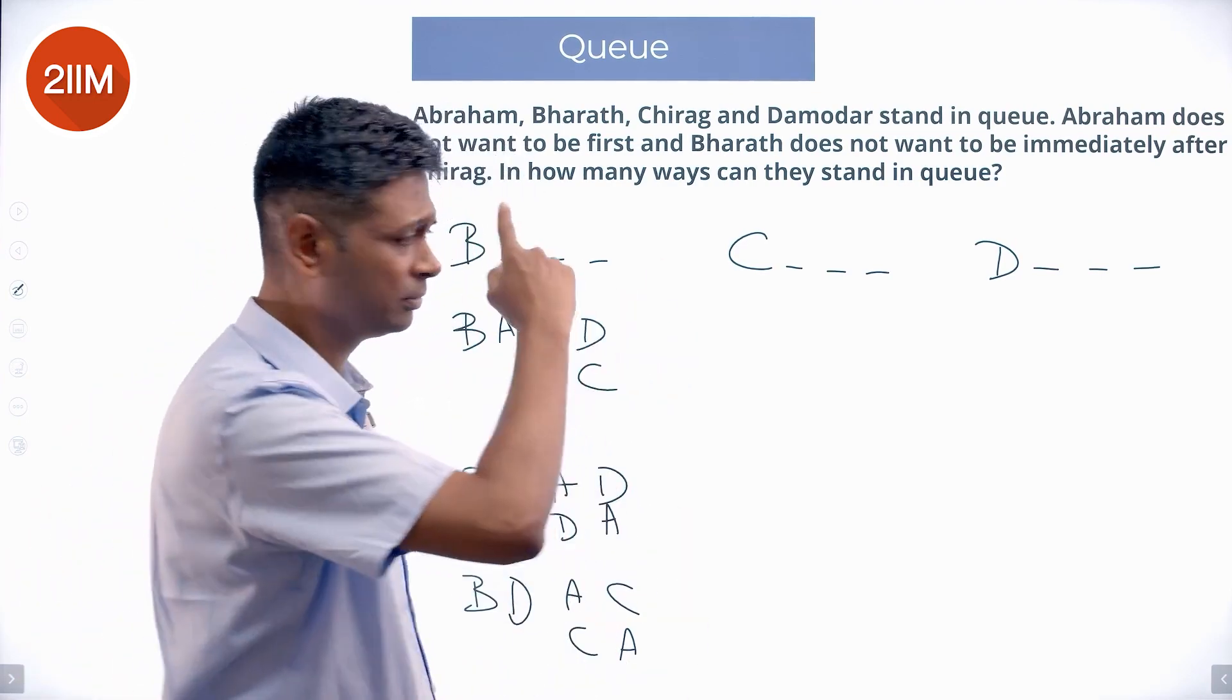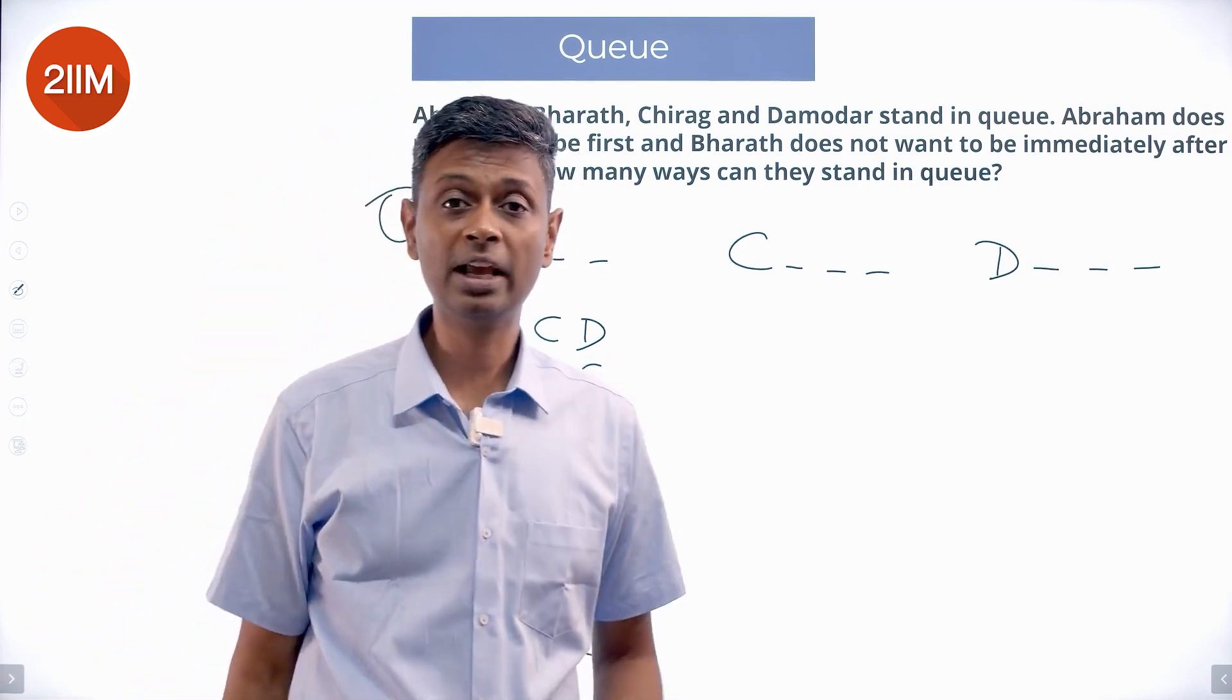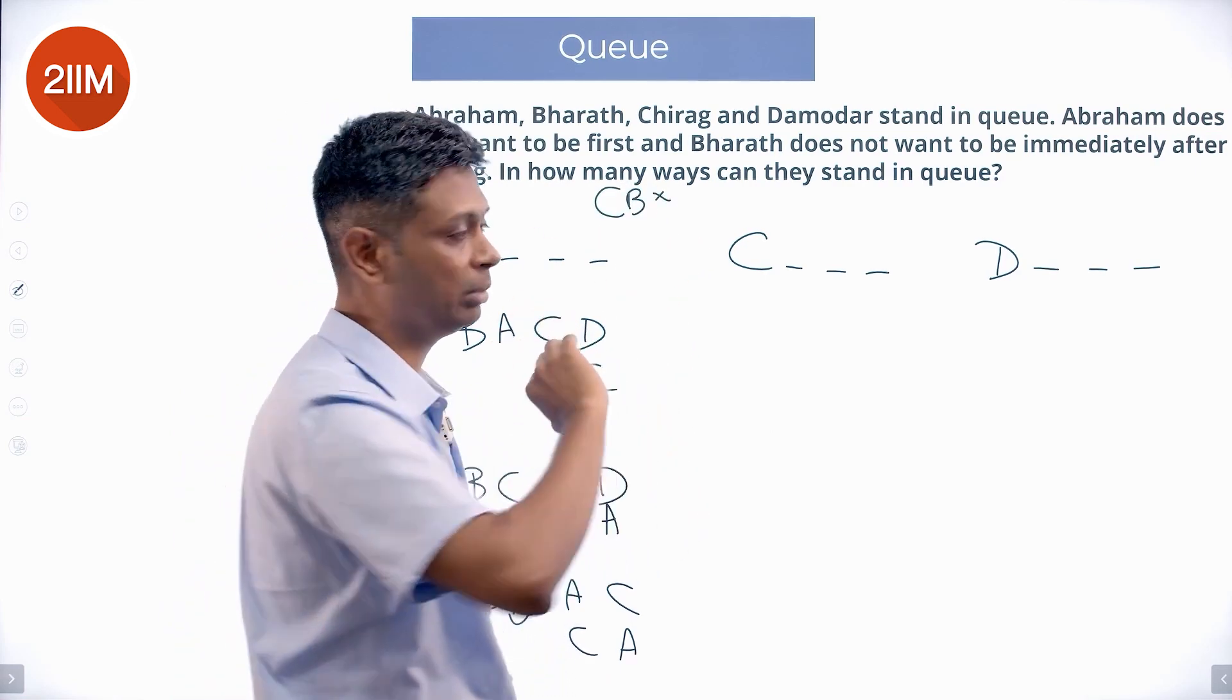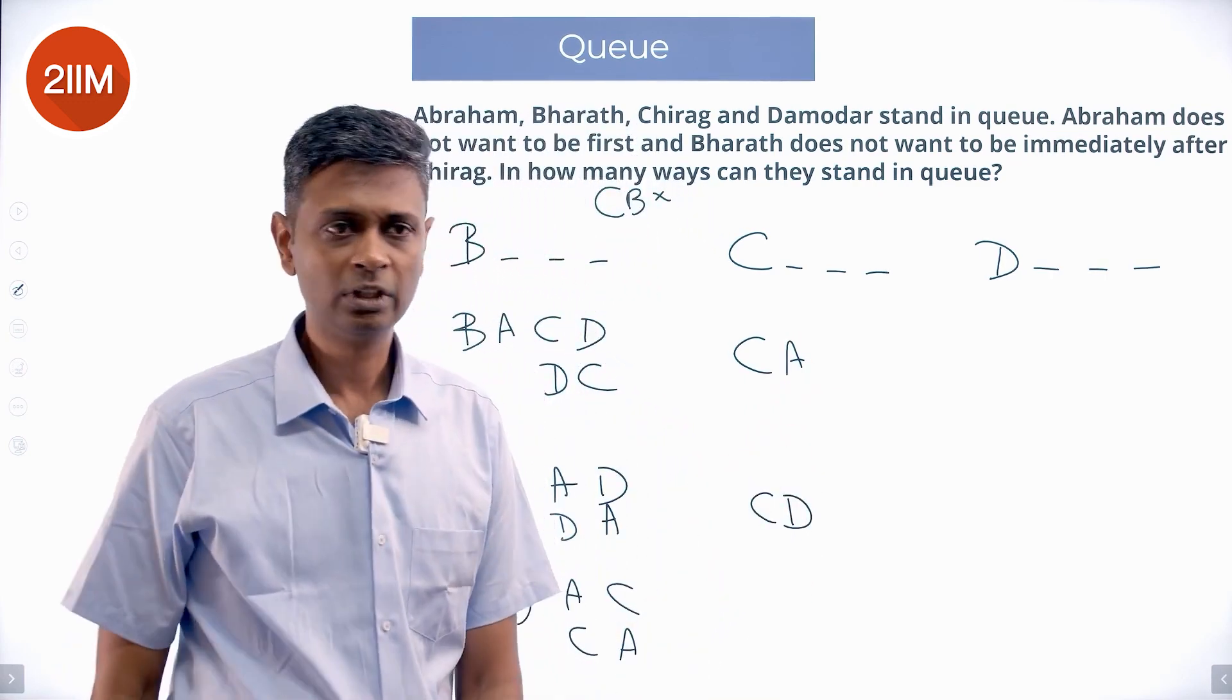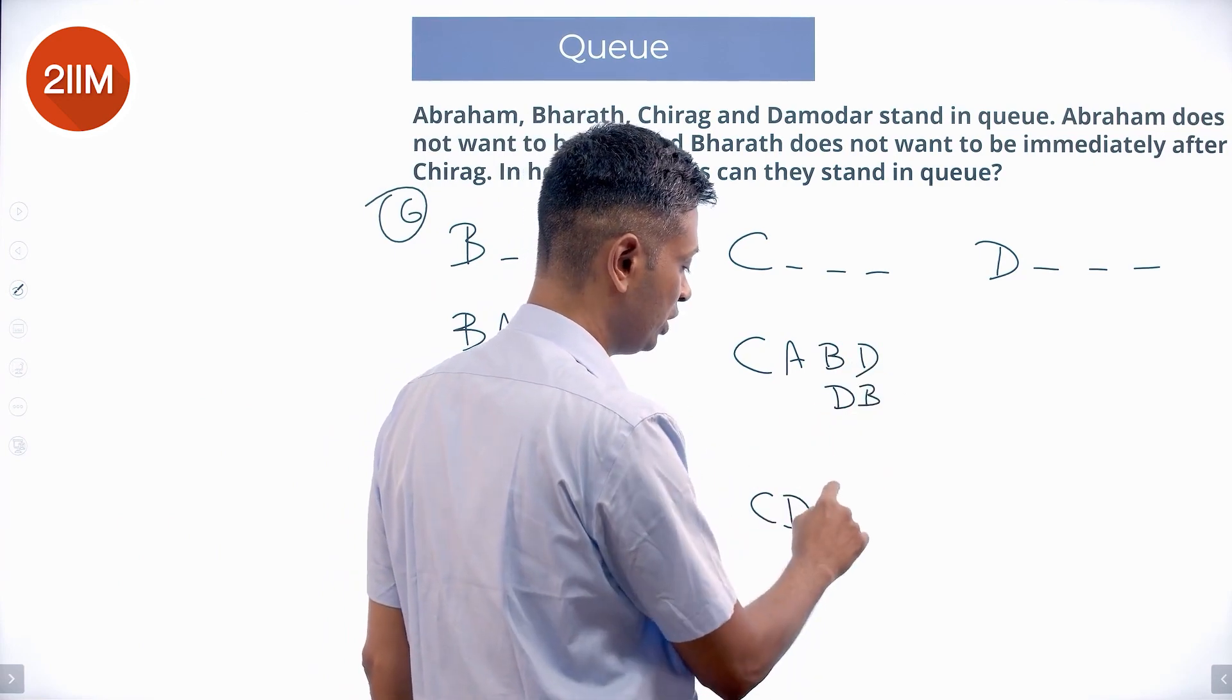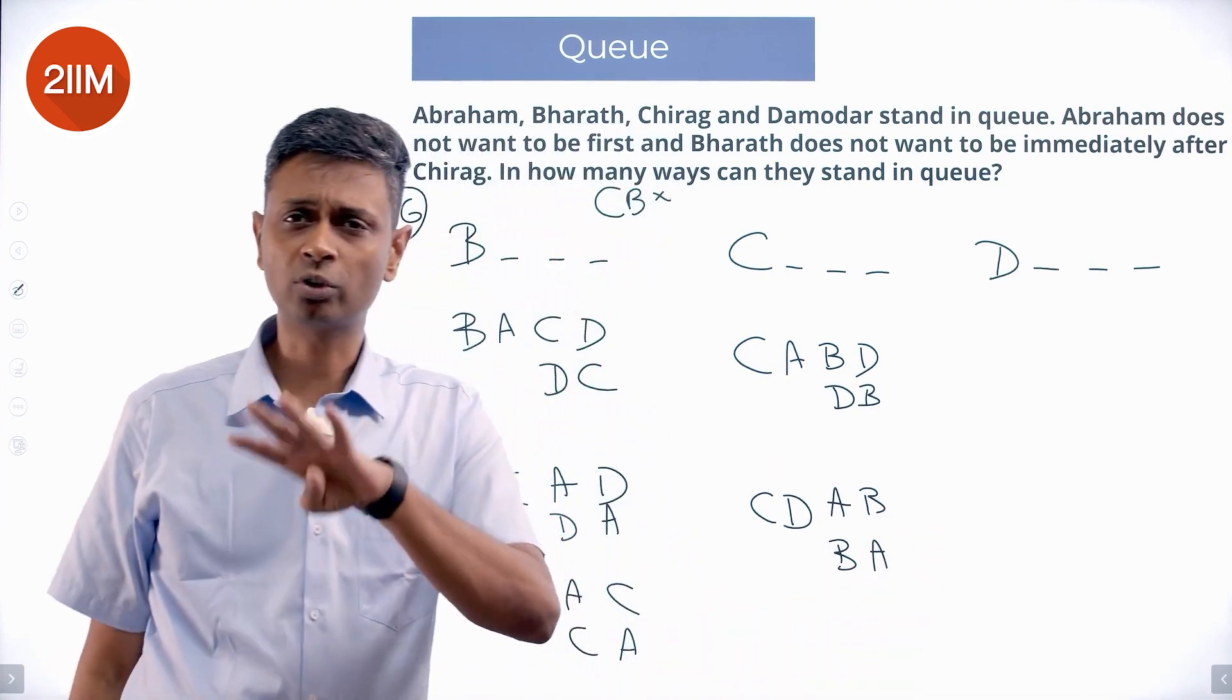Now let us move to C. If we start with C, the immediate next person cannot be B. The C B is ruled out. We cannot have a C B. So what could this be? This could be C A or C D. We could have C A B D, C A D B, C D A B, C D B A. Four possibilities.